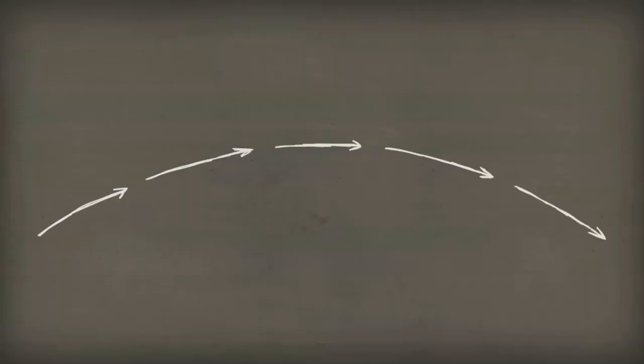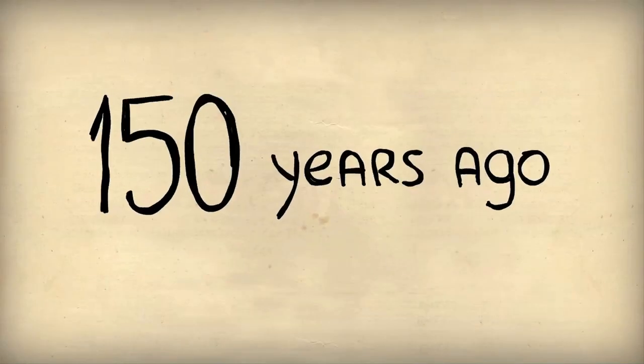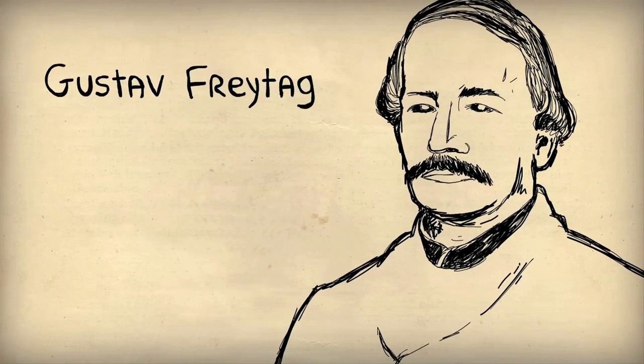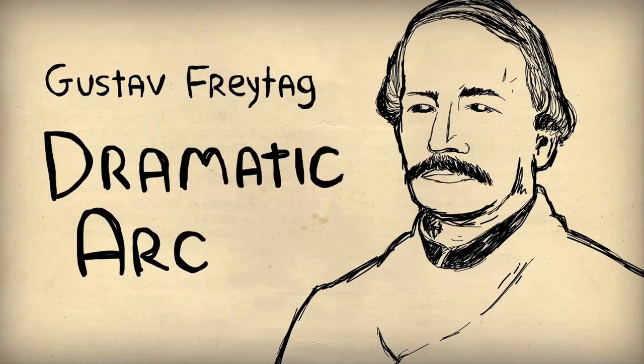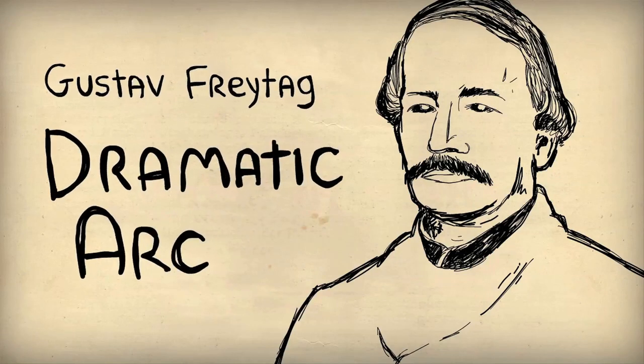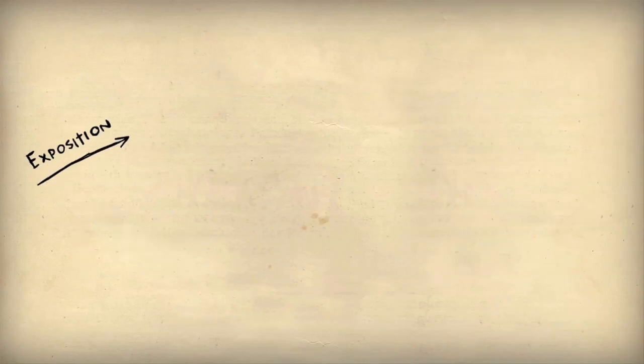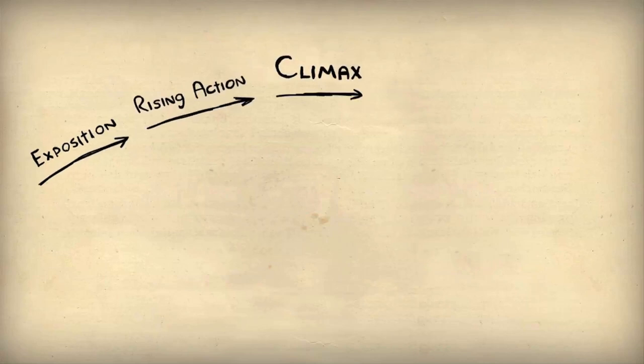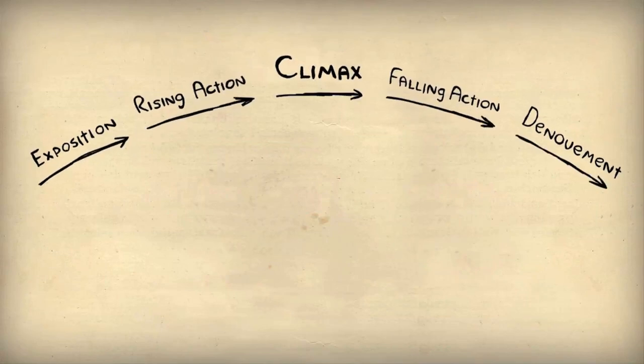It's important to understand that stories have to have this particular structure. 150 years ago, a German theorist named Freytag called this the dramatic arc. So, there are particular story aspects that go into making an effective story. Exposition, rising action, climax, falling action, and then this denouement.